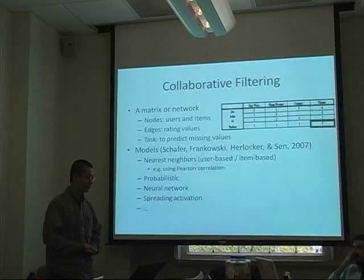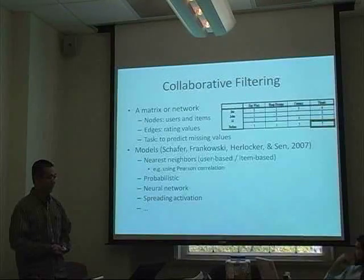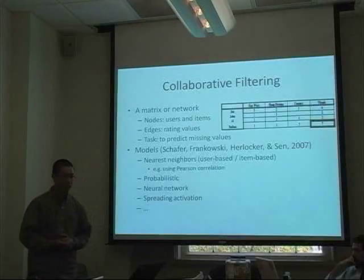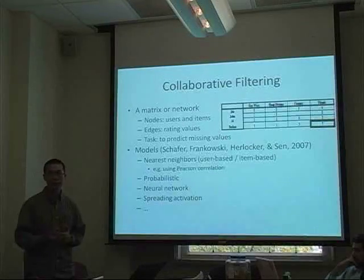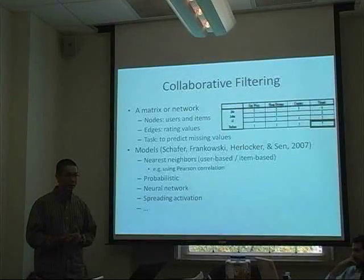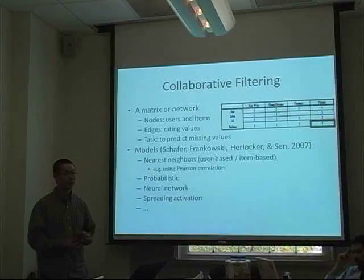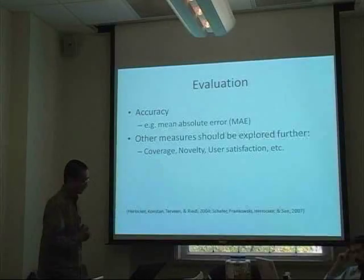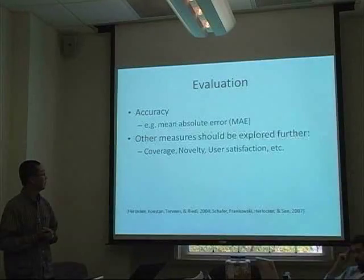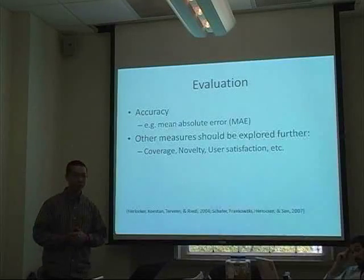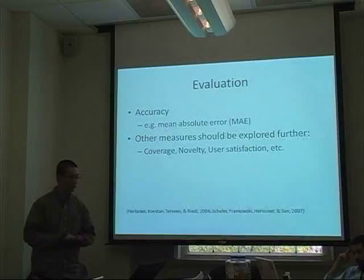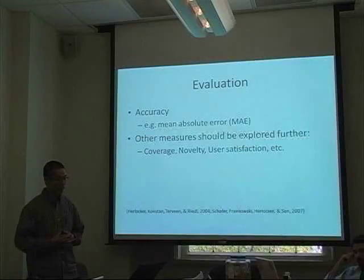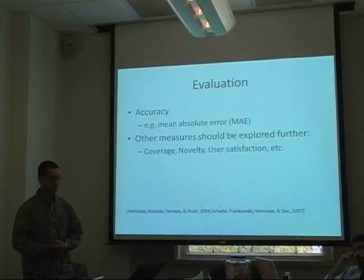There have been a variety of models proposed by researchers. The nearest neighbor model is very common — basically, you can use Pearson correlation to find similar users to the person in question and make predictions based on their previous history of ratings. To evaluate, most research uses accuracy-based measures, for example mean absolute error. Other research has also explored measures such as coverage, novelty, and user satisfaction.